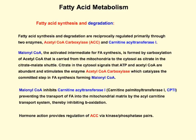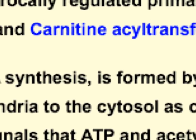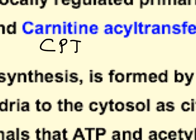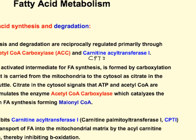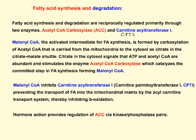Fatty acid synthesis and degradation — building fatty acids and breaking them down — are reciprocally regulated through the two main enzymes: acetyl-CoA carboxylase and carnitine acyltransferase, also known as carnitine palmitoyltransferase. CAT and CPT typically refer to the same thing. Citrate goes into the cytosol, signaling that there's plenty of ATP, activating ACC to catalyze the committed step of making malonyl-CoA. Malonyl-CoA will then feed back and inhibit CPT-1, and whenever you inhibit CPT-1 you inhibit beta-oxidation — the breakdown of fatty acids.